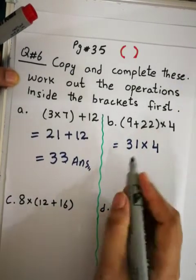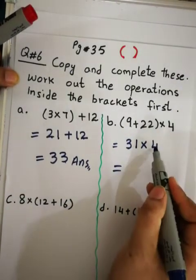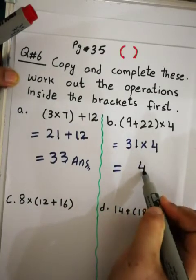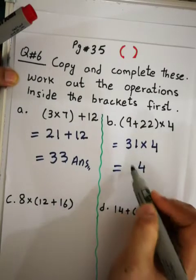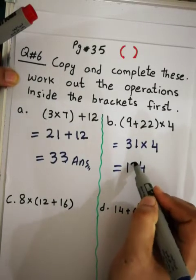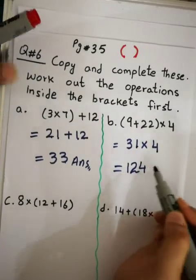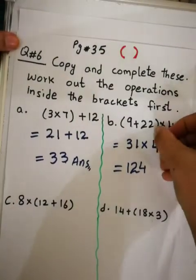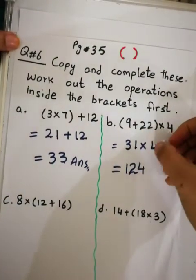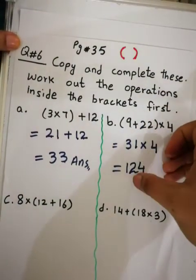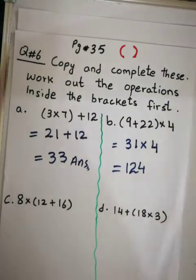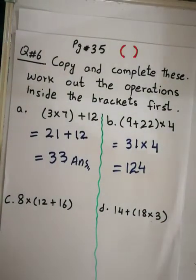Now we multiply: 31×4. 4×1 = 4, 4×3 = 12. So 31×4 = 124. That is the answer for part b.